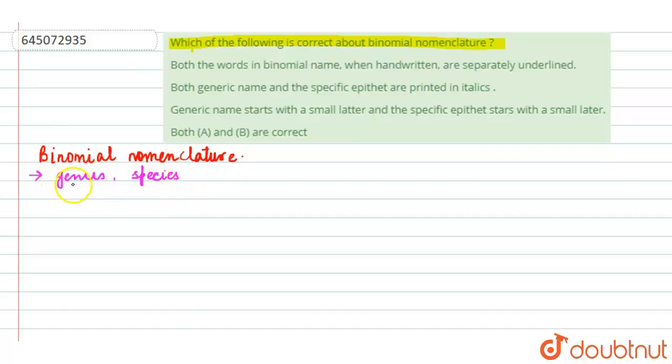The generic epithet starts with a capital letter and the specific epithet starts with a small letter. When they are printed, they are usually printed in italics. So whenever they are printed in books or wherever, the italics font is being followed.